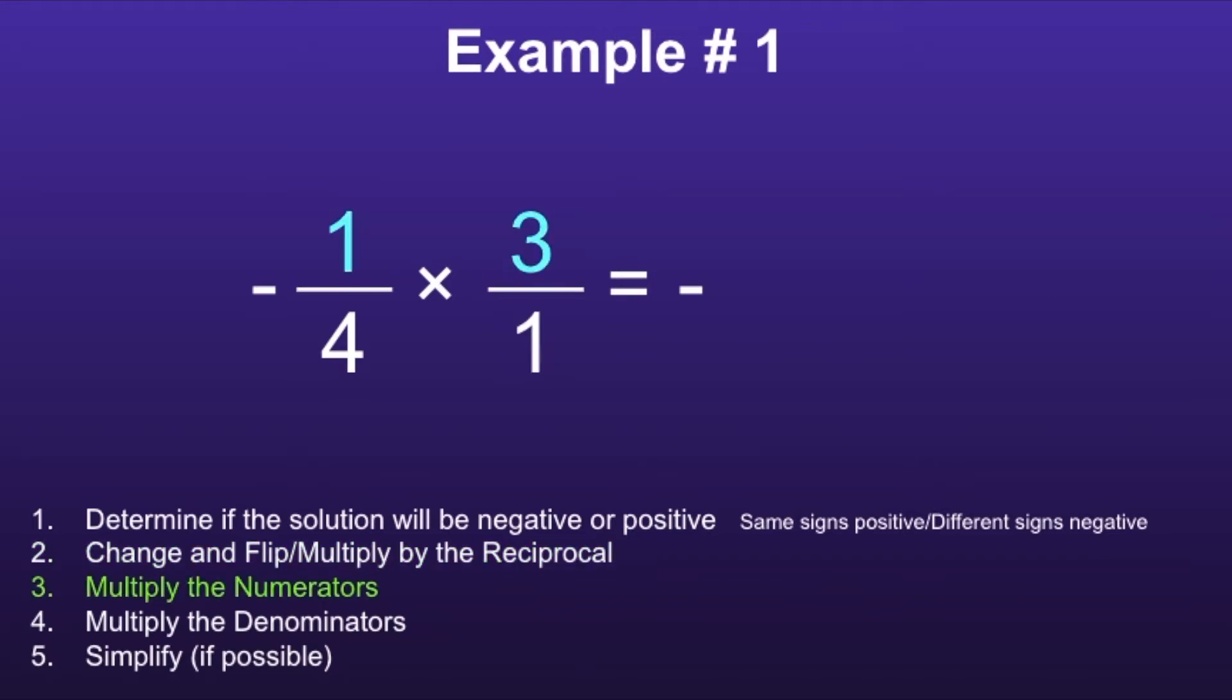Step three: multiply the numerators. One times three is equal to three. Step four: multiply the denominators. Four times one is equal to four.